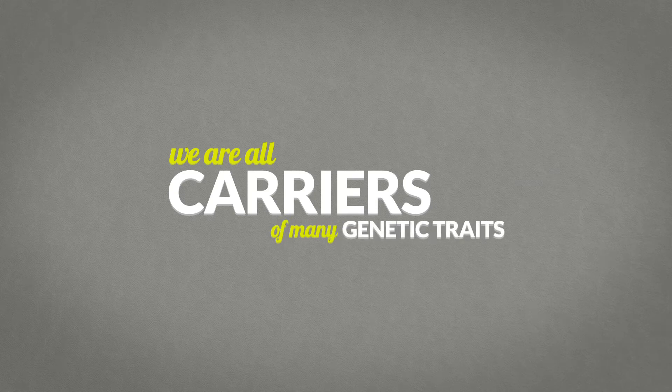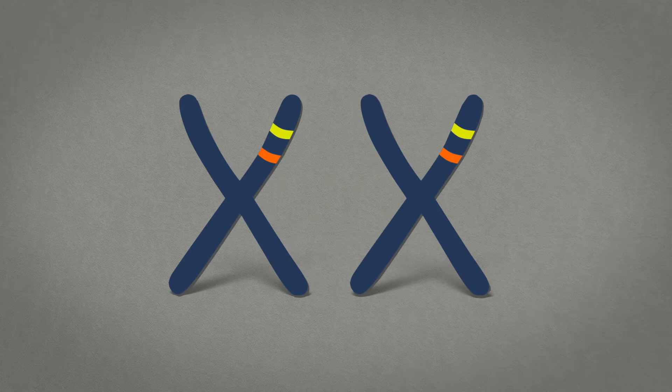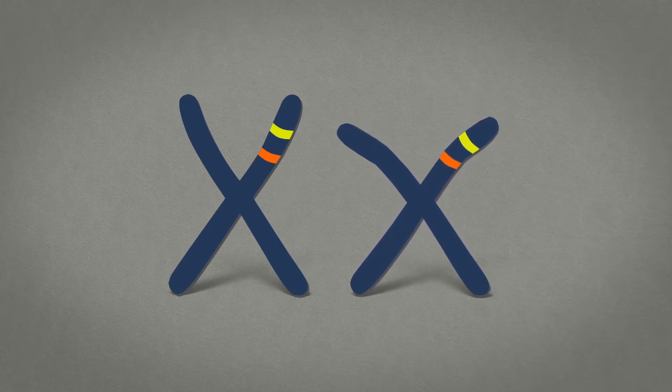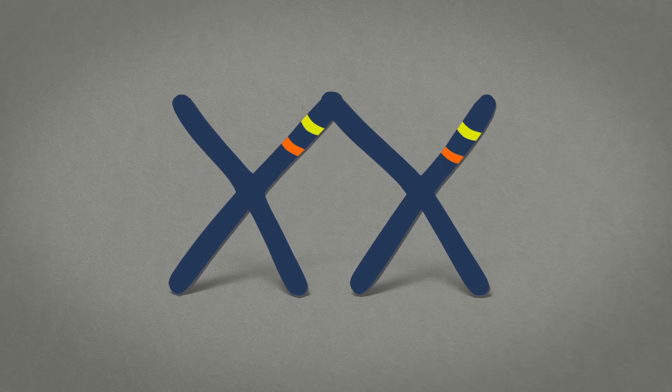We are all carriers of many genetic traits. Your genes come in pairs. A carrier of a genetic disease is a person who has one gene that does not work correctly, but the other works just fine. The working gene keeps the carrier healthy, so the condition doesn't appear.